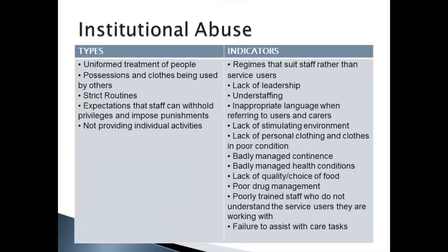Further indicators of neglect include poor personal hygiene, challenging behaviours, and depression. Organisational abuse. Types of organisational abuse might include uniform treatment of people, possessions and clothes being used by others, strict routines, expectations that staff can withhold privileges and impose punishments, and not providing individual activities. Indicators might include regimes that suit staff rather than service users, a lack of leadership, and understaffing.